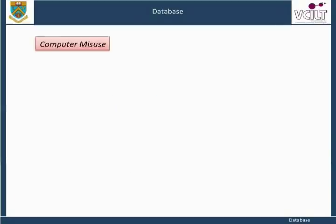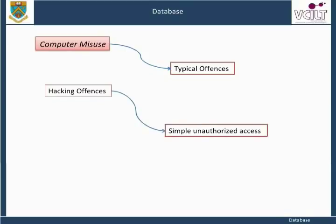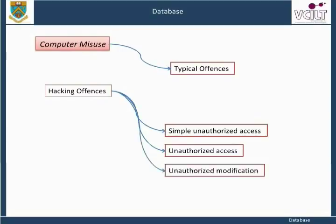Computer misuse: typical offenses. Hacking offenses. Simple unauthorized access — merely accessing data to which you are not entitled; the law is not concerned with the system's controls per se. Unauthorized access with intent to commit an offense — so you don't actually need to have succeeded, just to have intended to do something to the database. Unauthorized modification — no one can even attempt access without making some changes, but the purpose is to penalize outcomes.